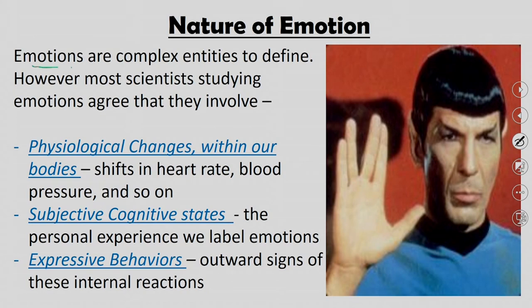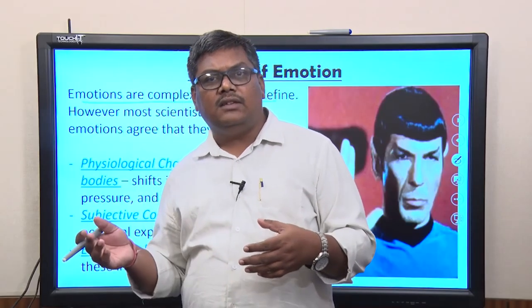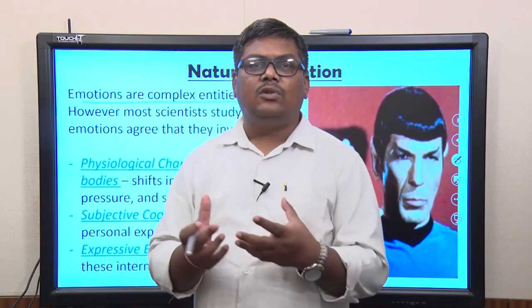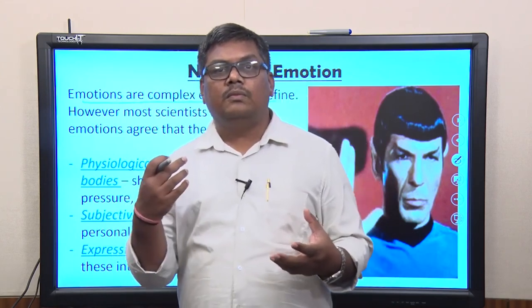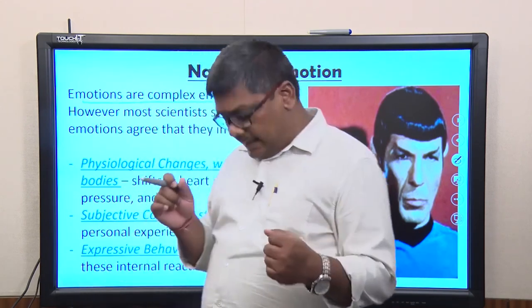Emotions are complex entities to define. They have multiple facets and processes, making them complex. Emotions are also different from moods — we will come back to that distinction. Emotions are complex because they are dependent on so many things: body arousal, thinking process, the kind of information received, past experiences, memory, and language. So many things act together to define or create emotions.